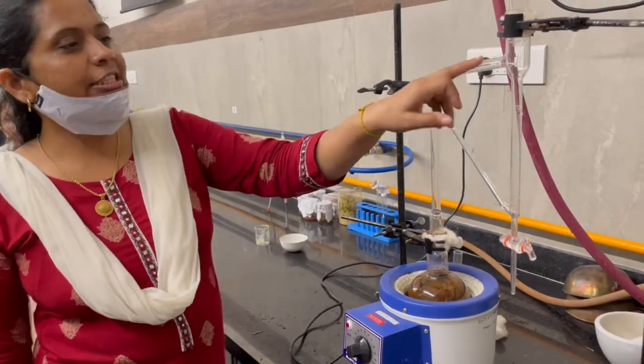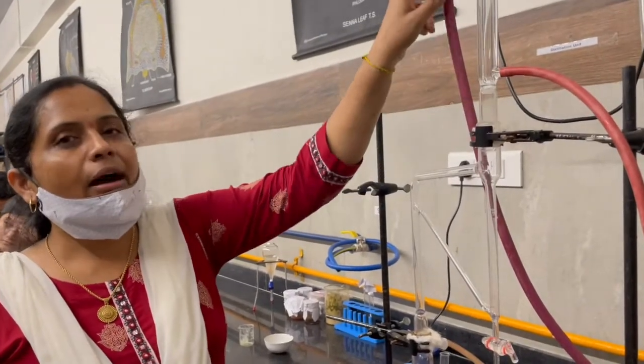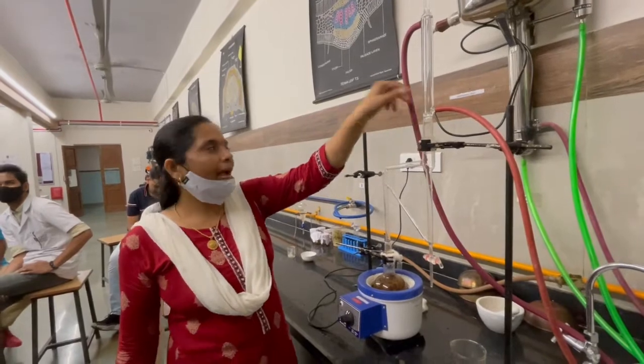This is a Clevenger assembly. Here is a condenser which has an inlet and outlet. Proper water supply and electricity supply is needed for our whole practical.